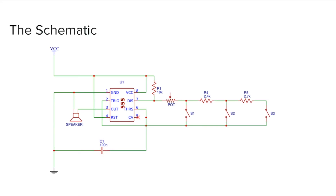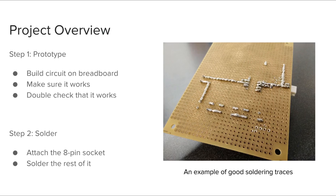We're going to ask you to solder in this project, so as always, prototype on the breadboard first, make sure everything works, then transfer it over onto your perfboard. A good example of soldering traces has no abnormally large bumps, no really thin parts, and everything makes good contact to the copper pads. Keep long parallel parts of the solder farther apart from each other to avoid unintentional solder bridges.